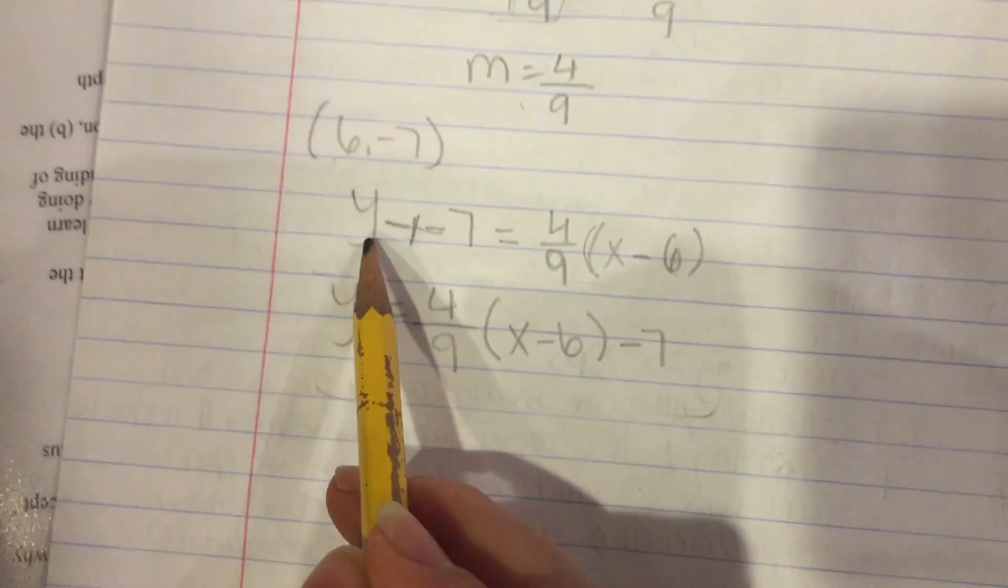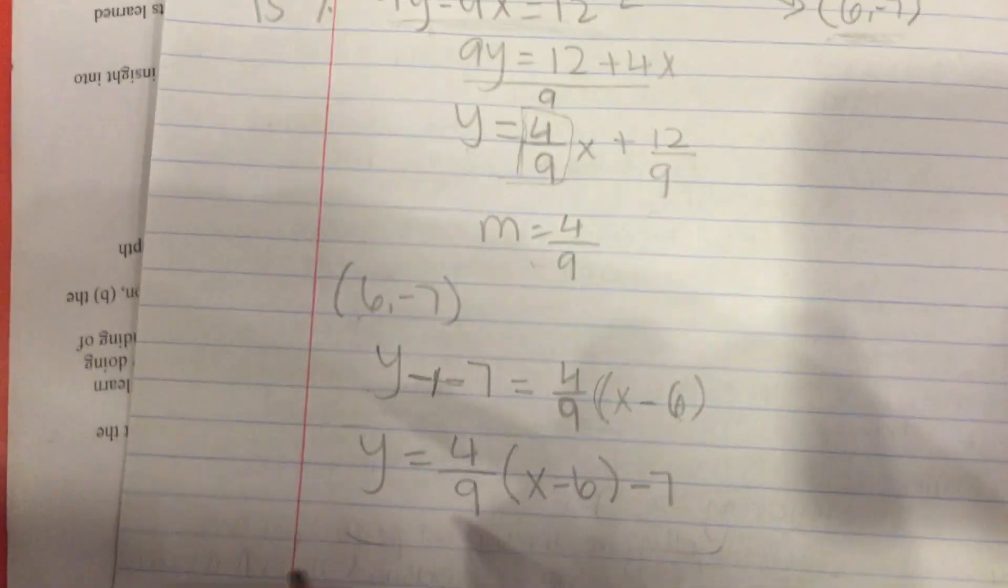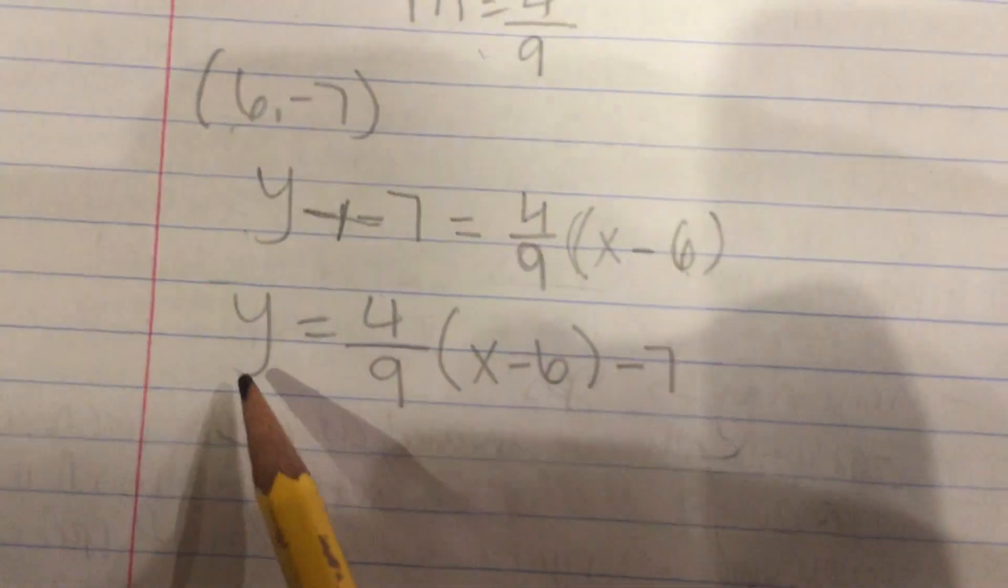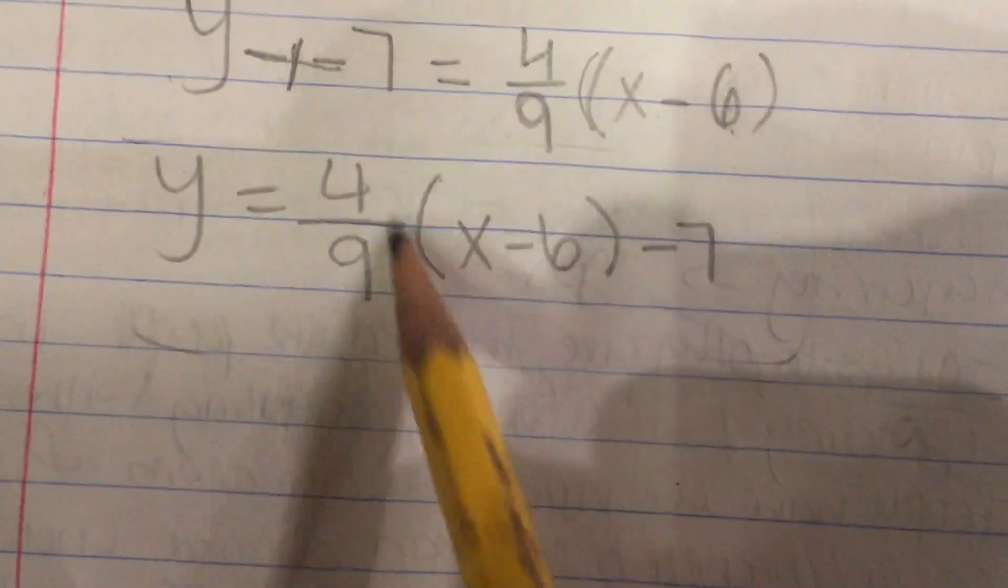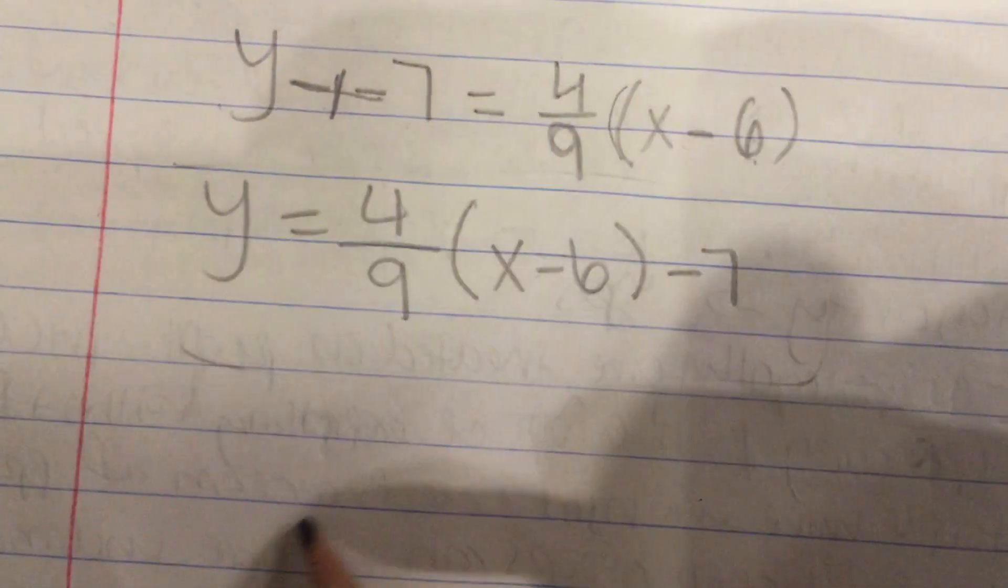Then you can solve it to get y alone again and your final equation would be y equals 4/9 x minus 6 minus 7.